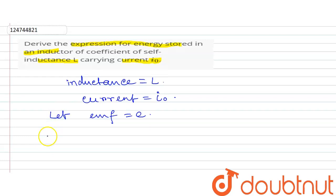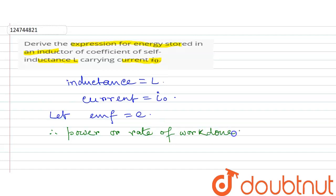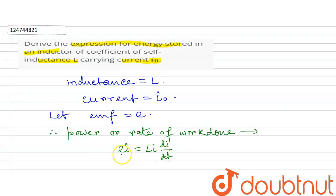Power is the rate of work done. So the power or rate of work done — the power is equal to L·I·dI/dt, because E equals L·dI/dt, which means E·I·dI/dt.